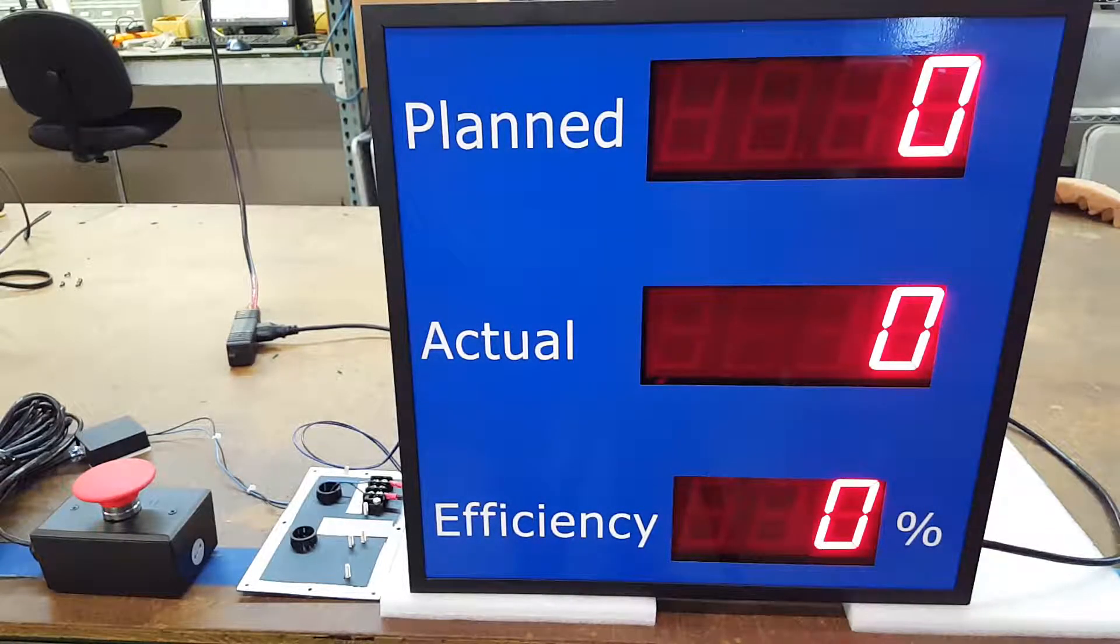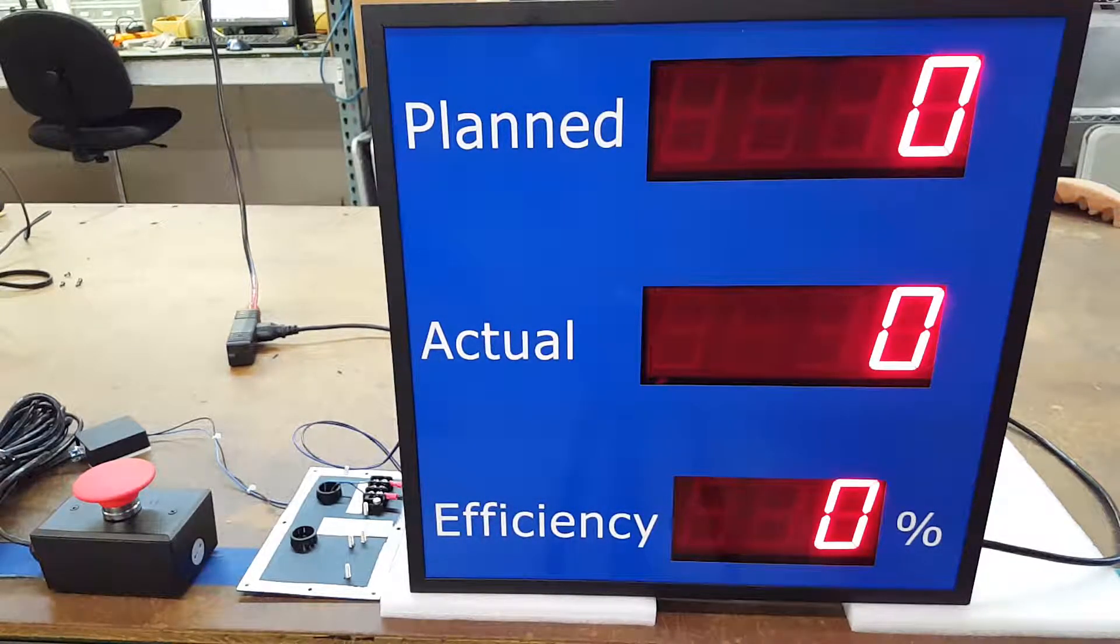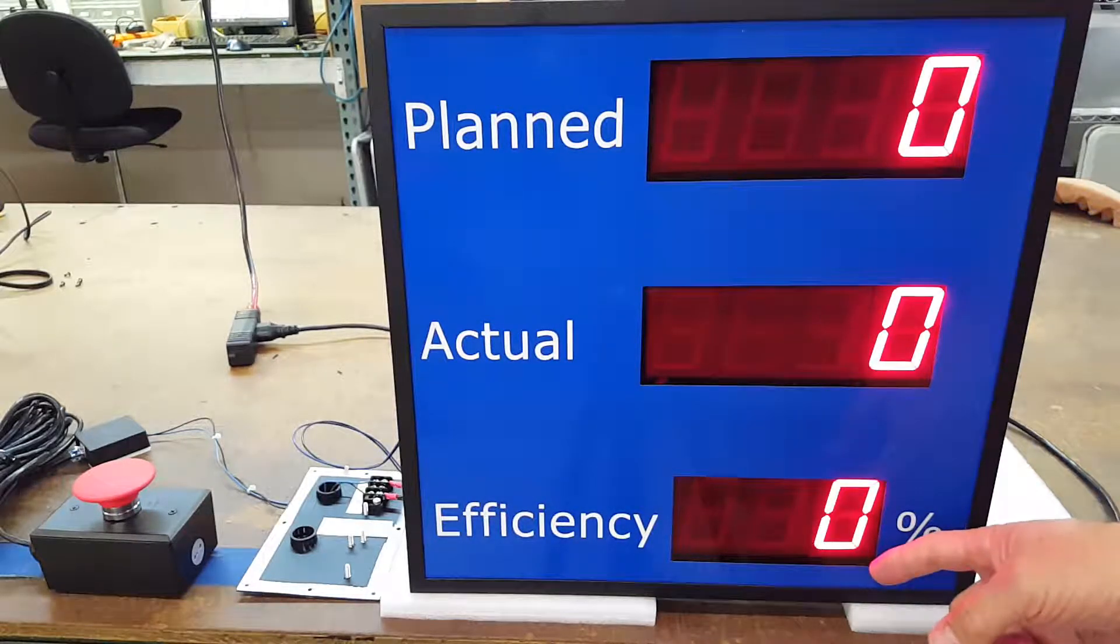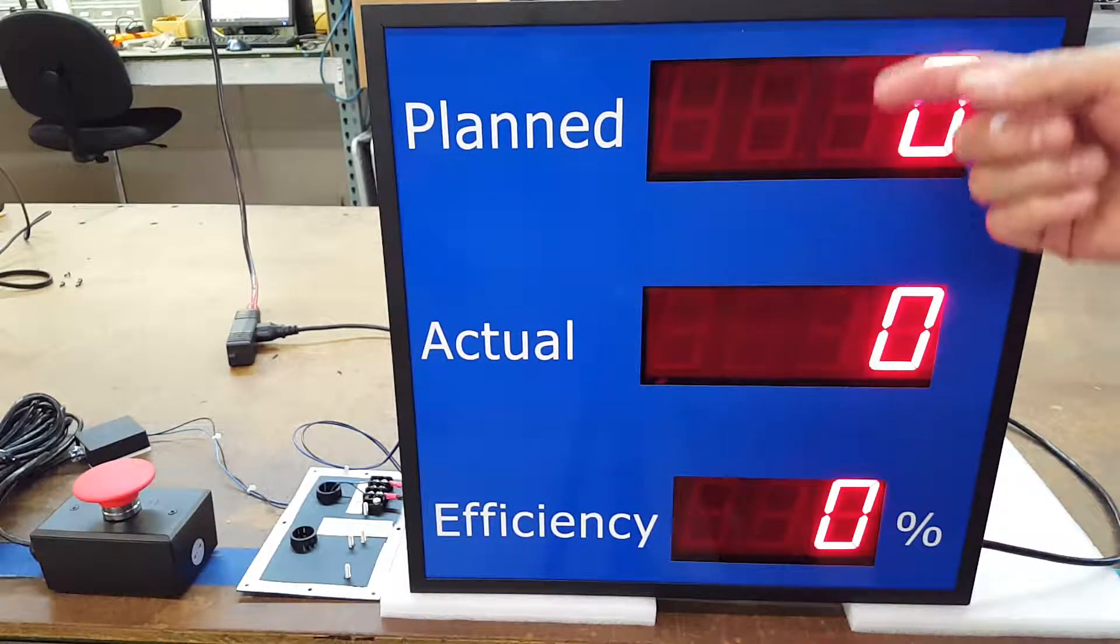Hello, this is Jim with DC Digital and today I'm demonstrating the DC25C-2-EFF. It's an efficiency counter. It gives you the total efficiency between the actual and the planned.